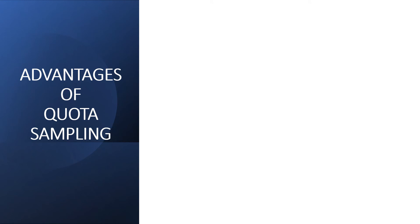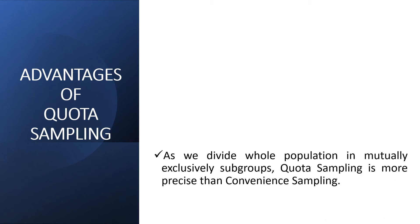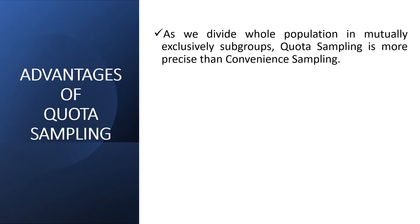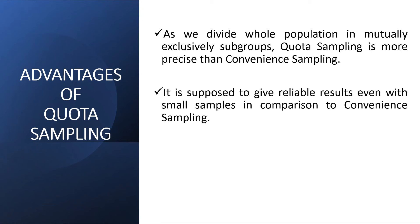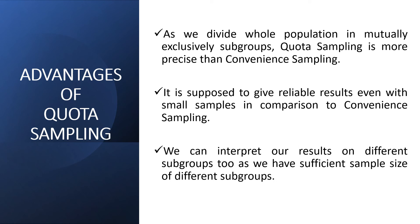As quota sampling is a mixture of stratified and non-probability sampling, it will have advantages and disadvantages of both. Advantages: since we have divided the whole population into mutually exclusive subgroups, quota sampling is more precise than convenience sampling. It is supposed to give reliable results even with small samples, and we can interpret results on different subgroups since we have sufficient sample sizes for each.